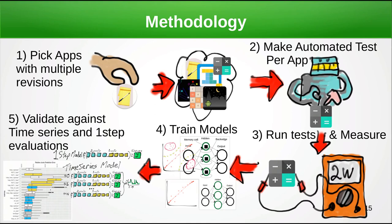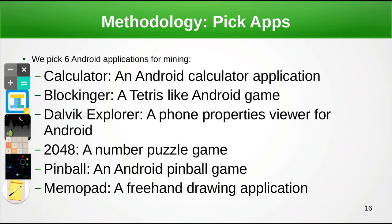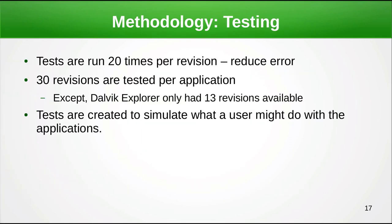Our methodology for producing and testing these models is as follows. First, we pick apps with multiple revisions, then for every app we make an automated test that runs the same across all revisions. We run these tests and measure them multiple times. The apps we picked range from calculator apps, to games, to utilities, to memos and drawing applications.